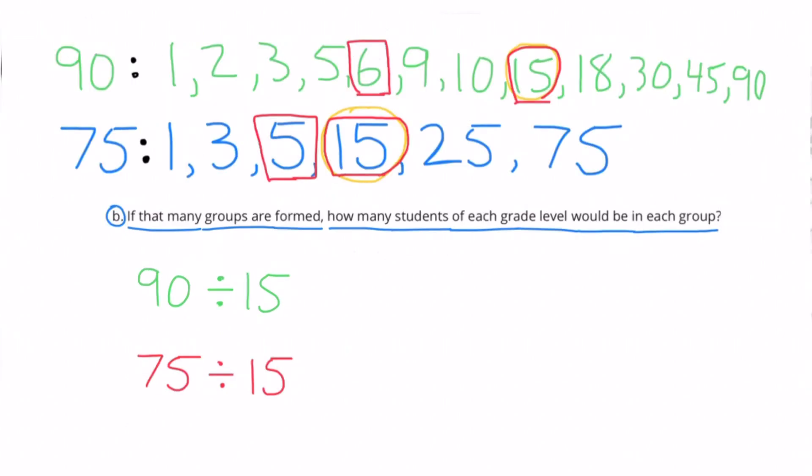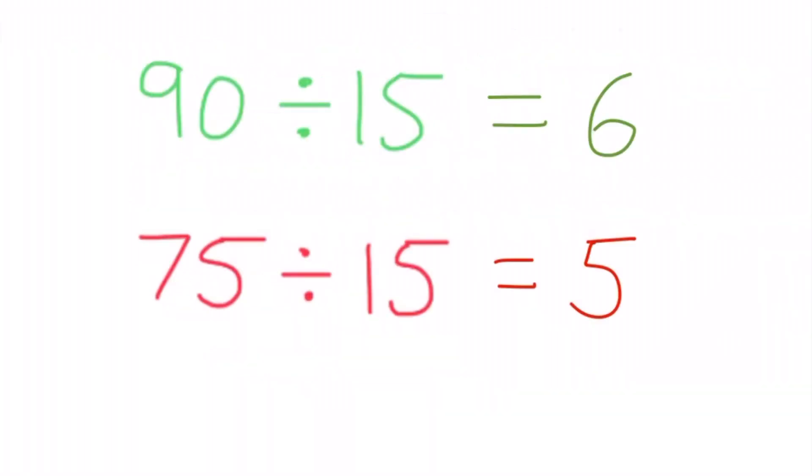Look to the top of the screen where I have the factors of 90. And you'll see that 90 divided by 15 equals 6 because 6 times 15 equals 90. Look underneath it where you see the factors of 75 and you'll discover that 5 times 15 equals 75 or 75 divided by 15 equals 5. If 15 groups were formed, there would be 6 sixth graders in each group and 5 seventh graders in each group.